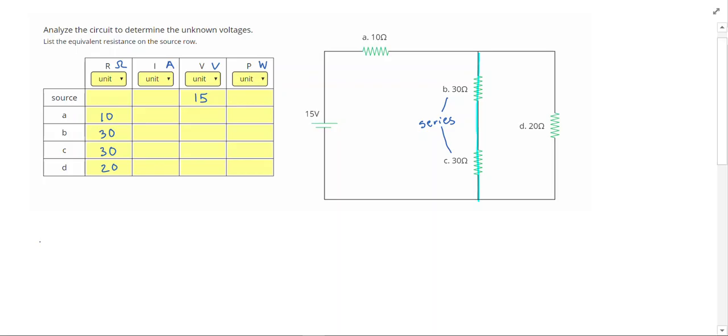Now I want to go ahead and redraw my circuit. So I still have my battery, I still have resistor A which is 10 ohms. But now where I used to have resistors B and C, I'm just going to draw one resistor called BC. And I'm going to say resistor BC has a resistance of 60 ohms. And I got BC by doing 30 ohms plus 30 ohms. And we still have resistor D over here at 20 ohms.